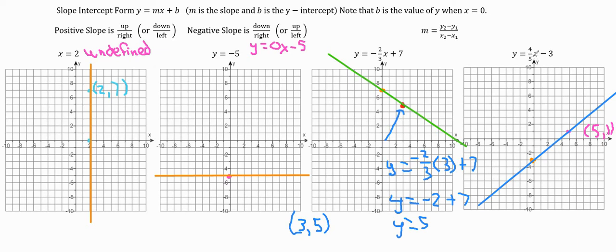And if we wanted to find the second point with algebra, we would just put the denominator in for x. So we're going to put 5 in for x, and we would have y equals 4 fifths times 5 minus 3. 4 fifths times 5 is 4. That's why we put the denominator in for x to get rid of the denominator. And that would give us y equals 4 minus 3. So y would be 1.